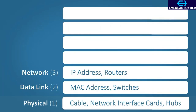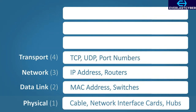Layer 3, the network layer, handles IP addressing and routing. At this stage of the OSI model, the source and destination IP addresses are added, and routers operate on this layer. Layer 4 is the transport layer. At this stage, the transport protocols are added, such as TCP and UDP. TCP is used for error handling and sequencing to ensure that no data is lost. This layer also adds the source and destination port numbers.